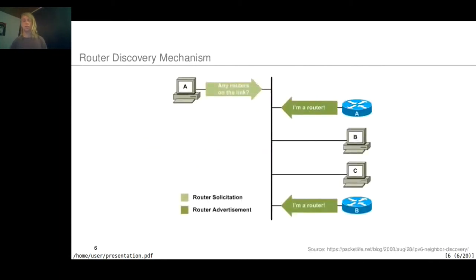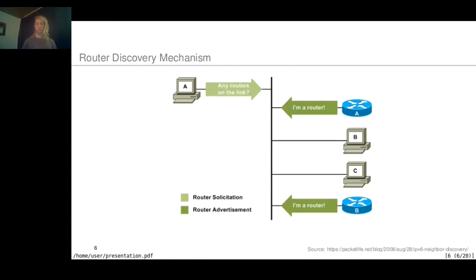How does the router discovery mechanism work? Every new node on the network will ask for the routers on the network by sending a router solicitation message. Every router on the network will receive this message and answer with a router advertisement message that contains all the necessary information for the host to set up its network interface.